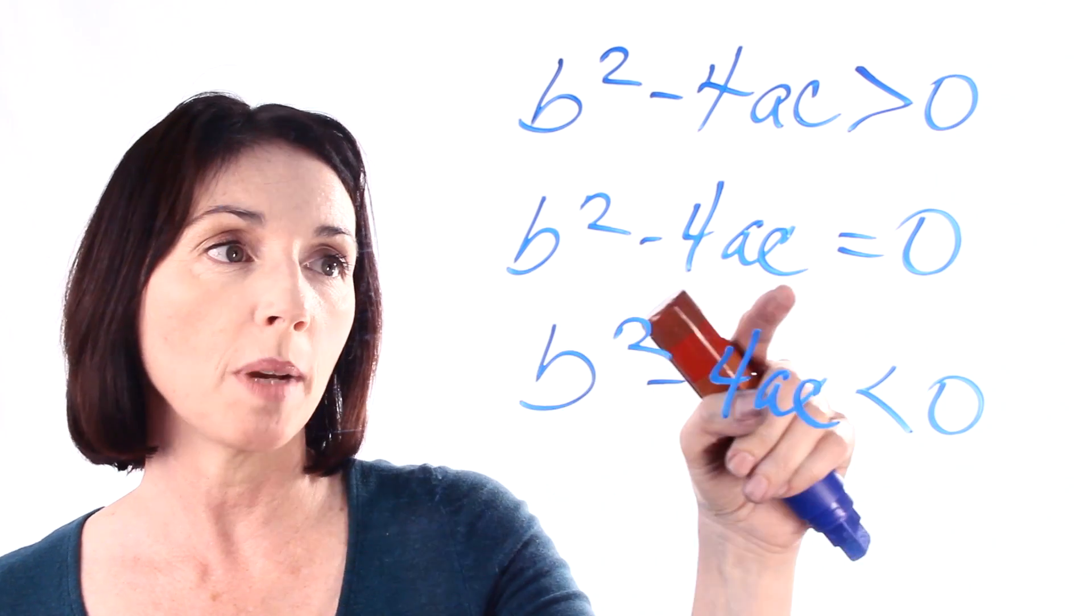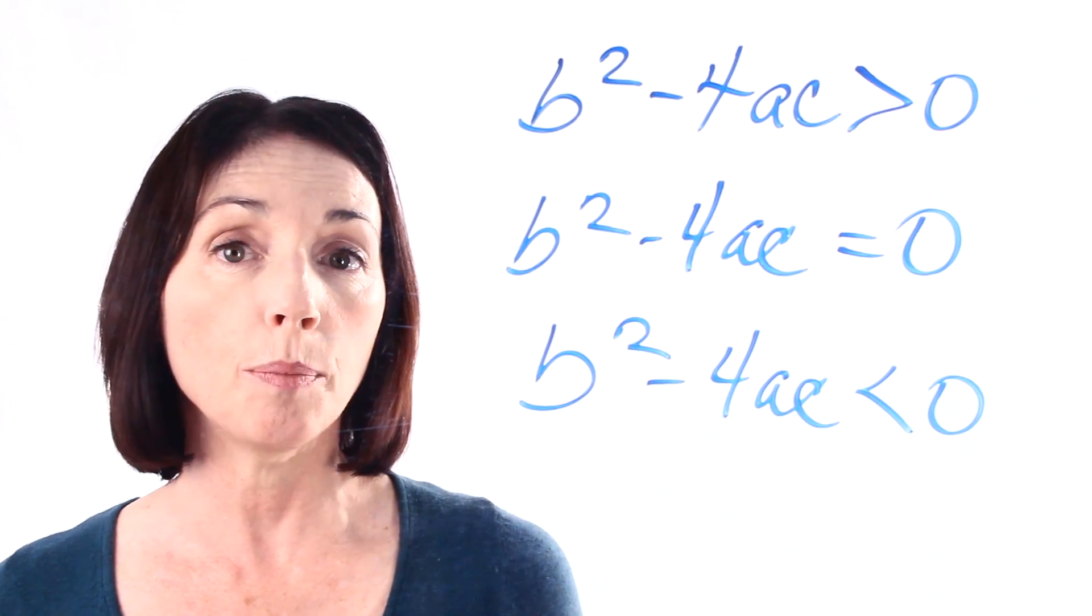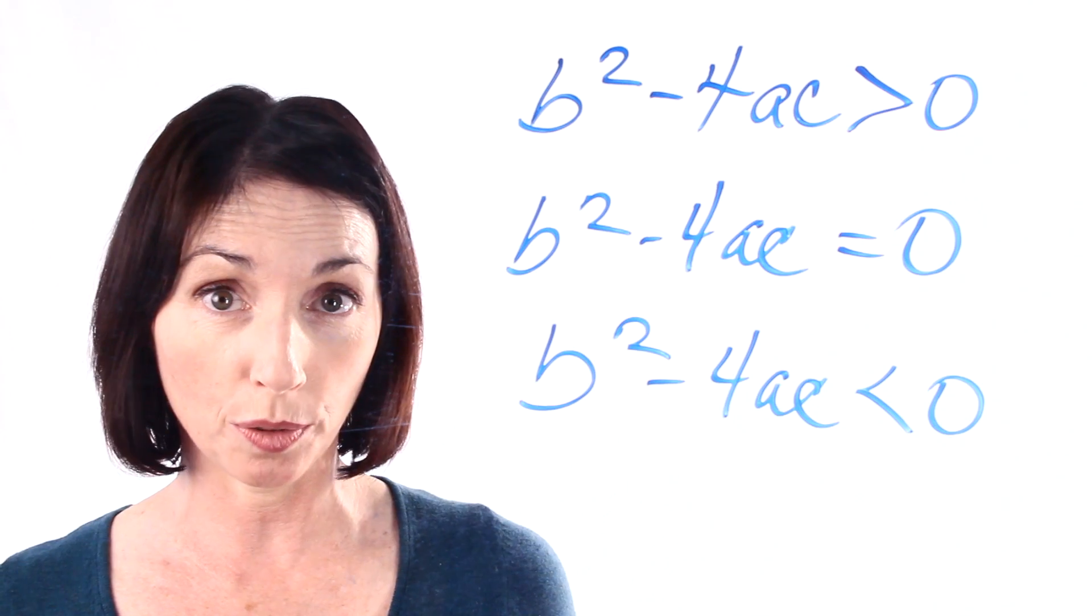If b squared minus 4ac is equal to zero, it means there's one real root and it's called a double root.